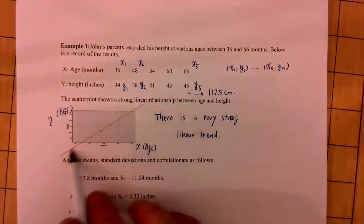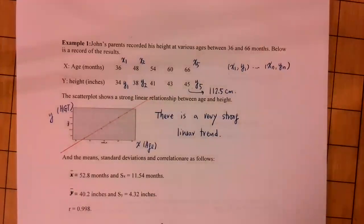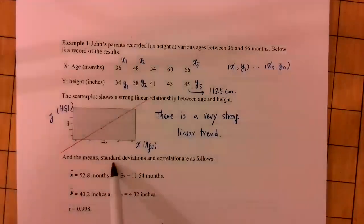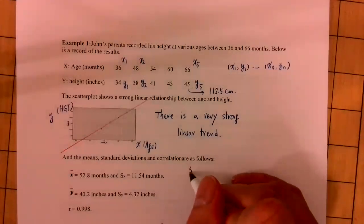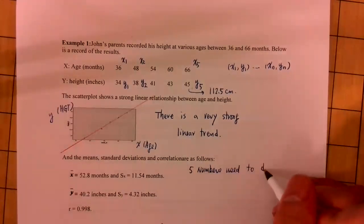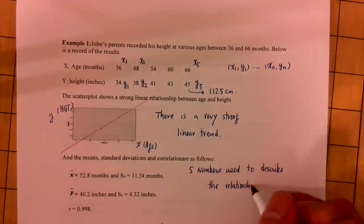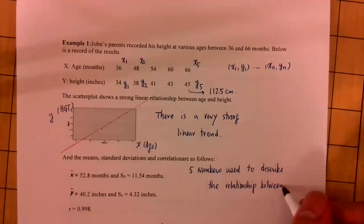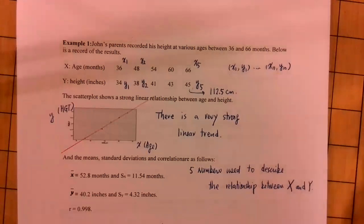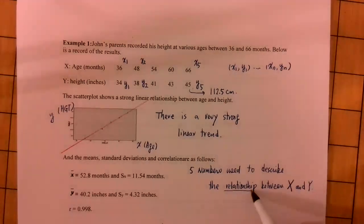So you believe there is a linear relationship between X (age) and Y (height). Since the data indicates a linear prediction line is reasonable, we proceed. For univariate data the five-number summary is: minimum, Q1, Q2, Q3, and maximum. But when describing the relationship between X and Y, the fine numbers people like to use are different.